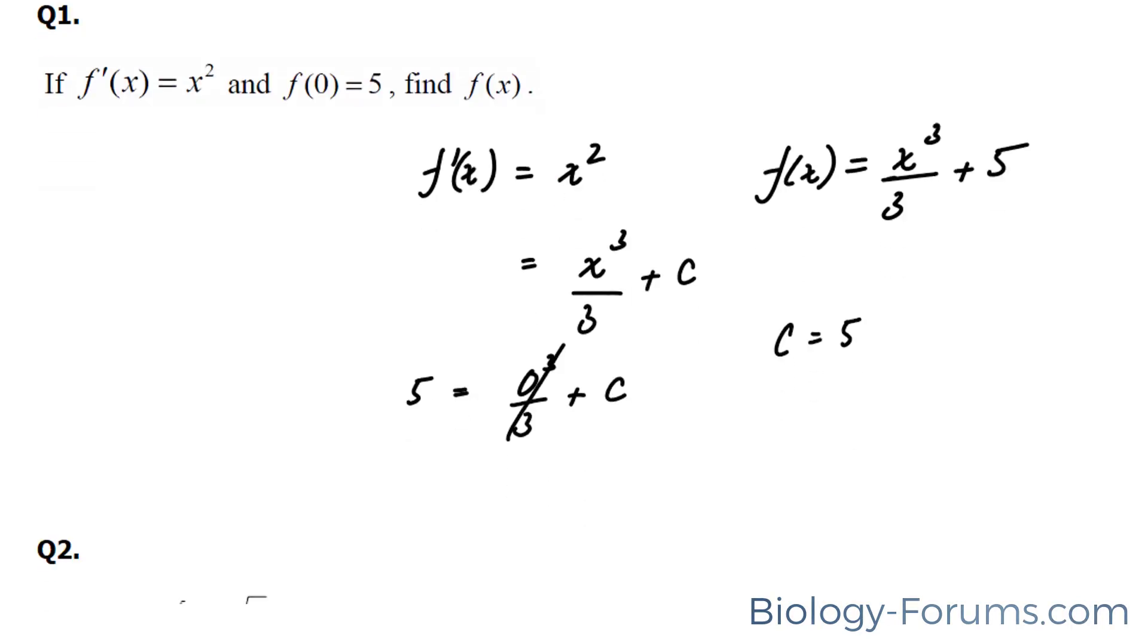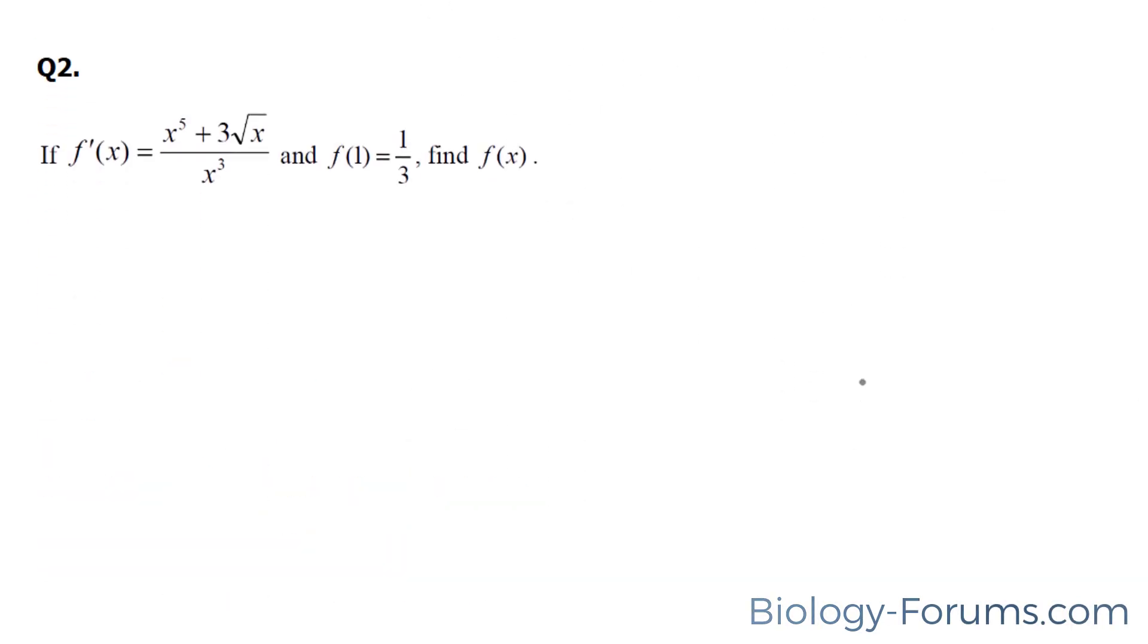Let's move on to question 2. Here, we're told that f prime is equal to this function, and f at 1 is equal to a third. Find f at x.